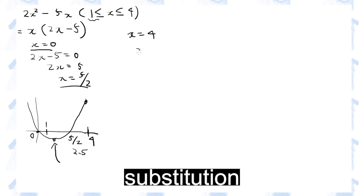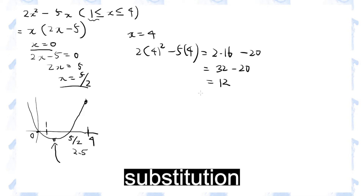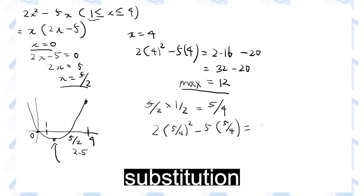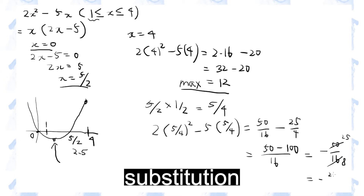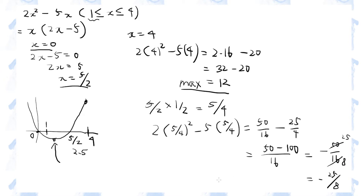When x is 4, the maximum value is 12. And what is the midpoint between 0 and 5 over 2? It's, of course, 5 over 4. So let's substitute 5 over 4 into this expression. So the minimum value is minus 25 over 8.